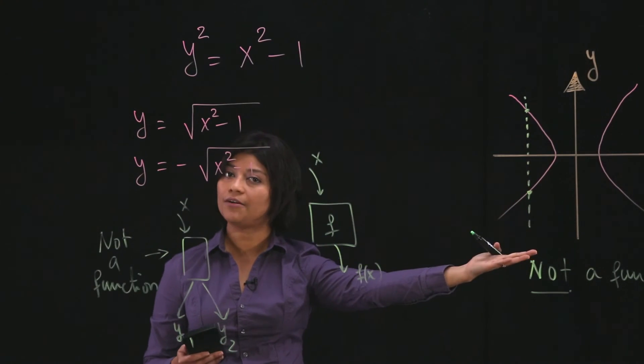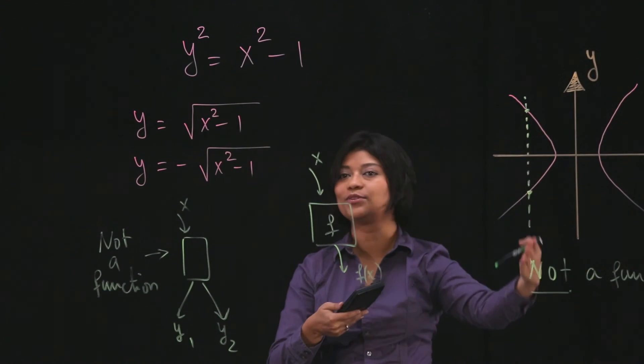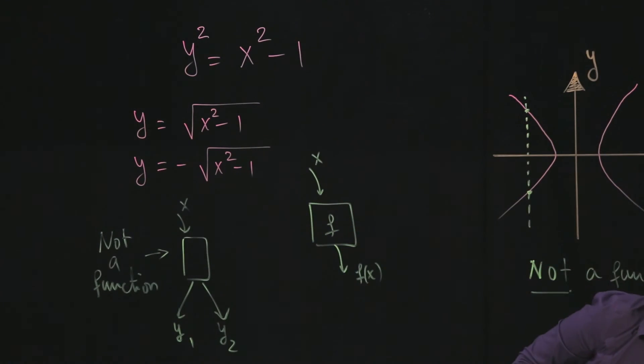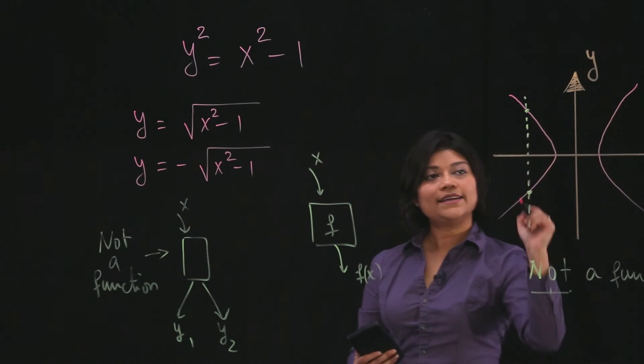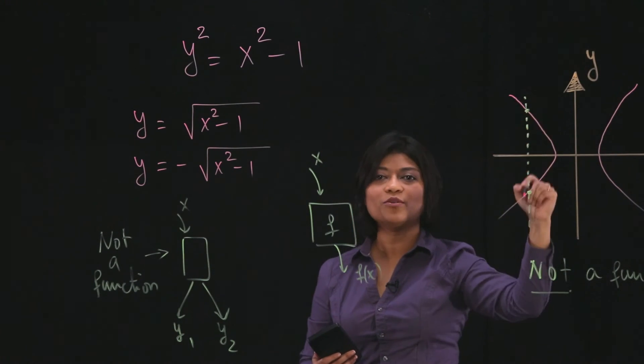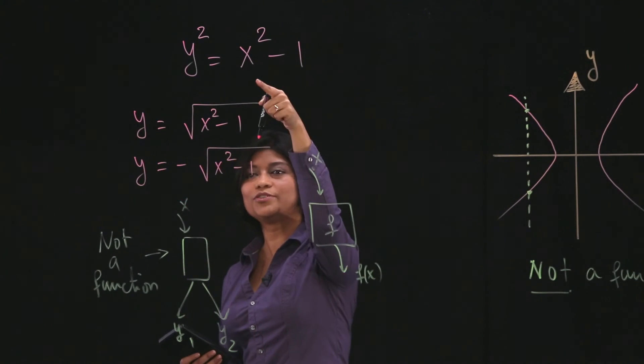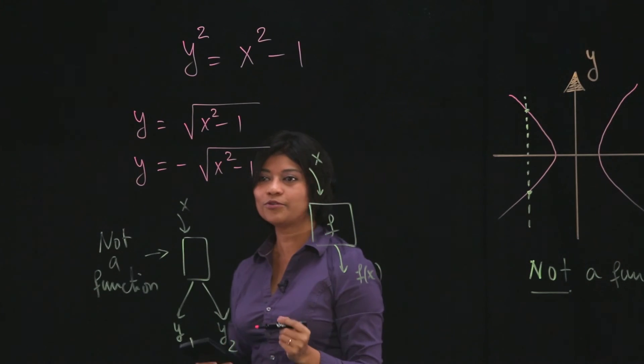So what you can do is you can use this definition to check whether the expression is a function or not. So you don't need the graph, really. But what we're going to do here is exactly what you did here with the vertical line test. All you have to do is find an x value that you can plug in to get two different y values. So can you think of an x value that you can plug into this function and get two y values? Of course.